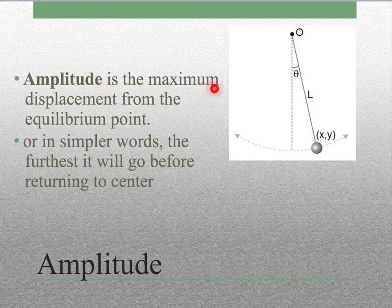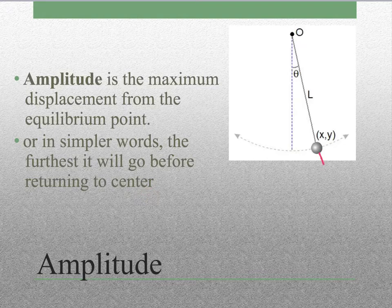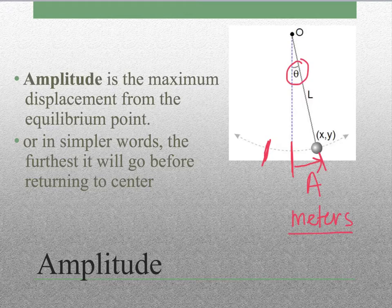Amplitude is the maximum displacement from the equilibrium point, or in simpler words, the furthest it will go before returning to center. If we look at our picture, if this bob only swings this far and then does the same on the other side, the distance from the center to the farthest point it reaches is the amplitude. We use the capital letter A to represent amplitude, and we measure it in meters most of the time — occasionally in angles, but for this class, primarily meters or centimeters.